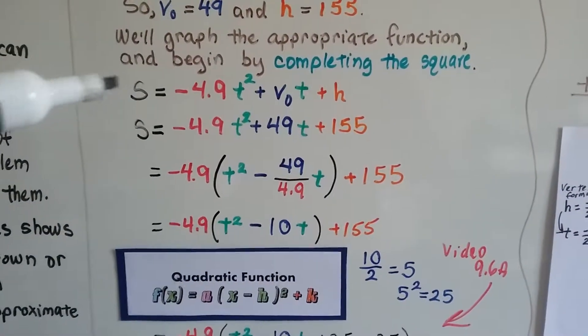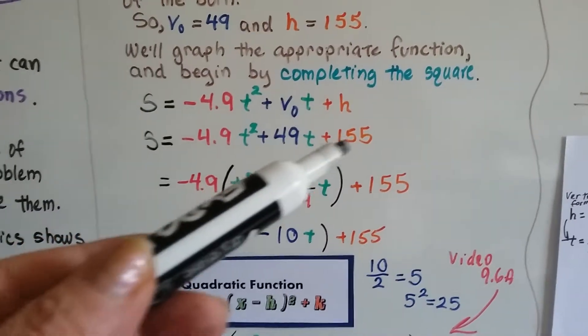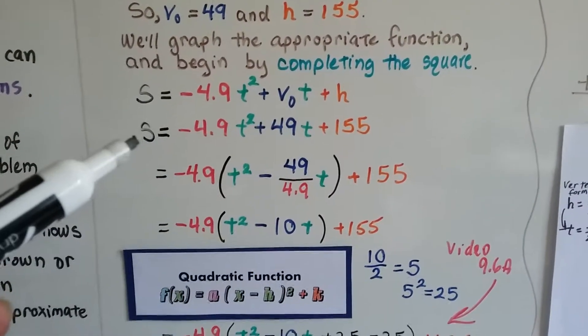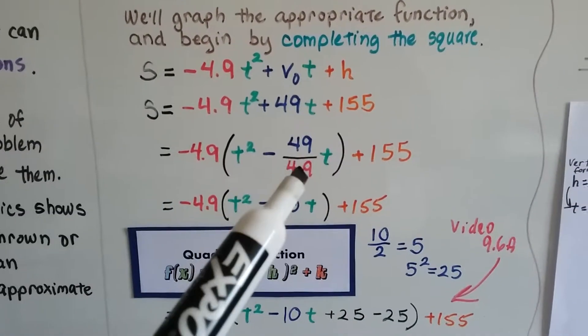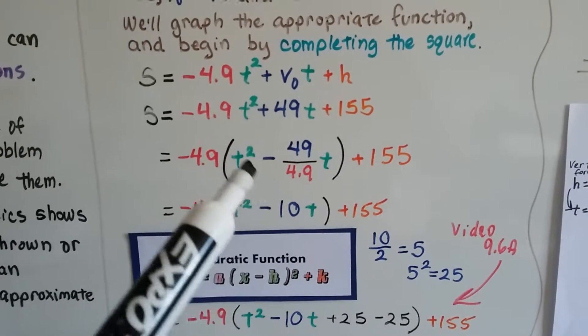Here's our formula. We plug in our values of 49 and 155, and this is what we get. We can divide our b value by this 4.9, and we're going to get this.